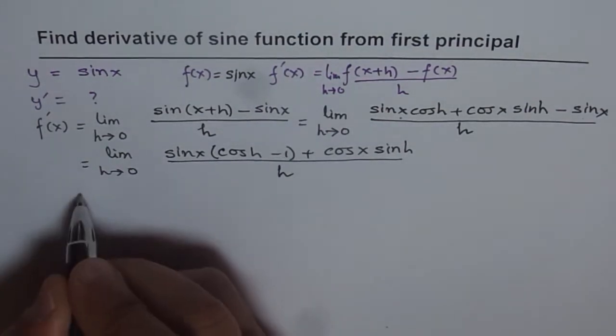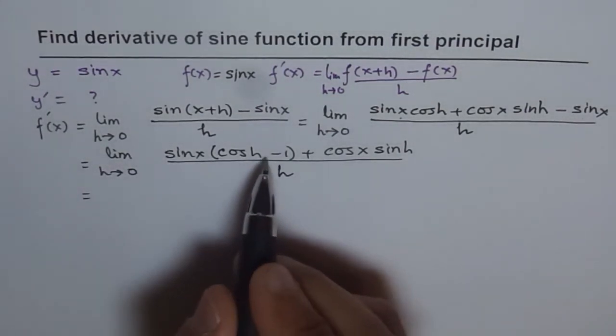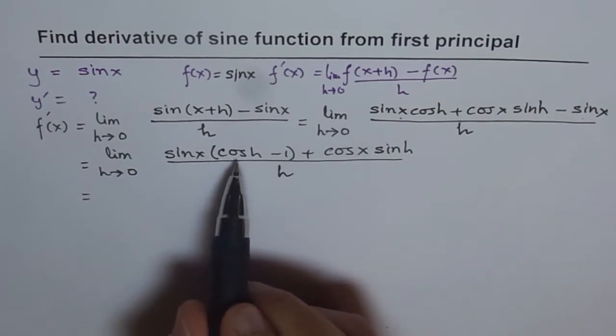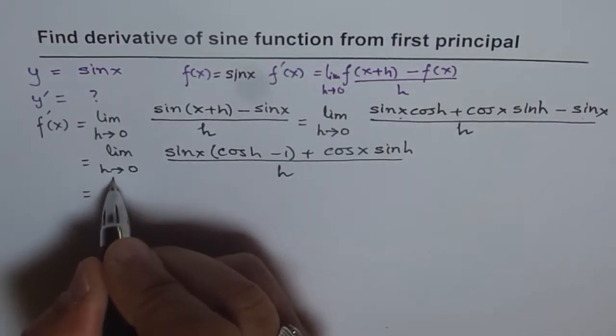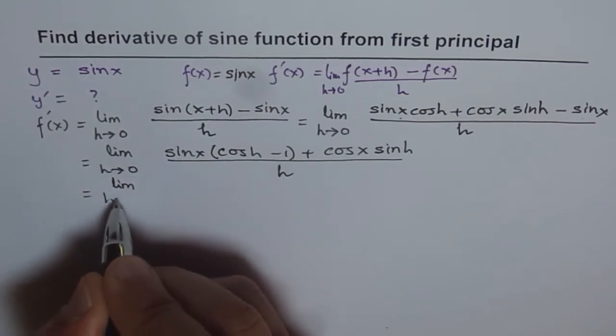And now what I will do is I will write this in two terms. Term first over h plus the second term over h. Limit h approaches 0.